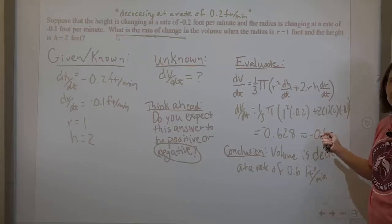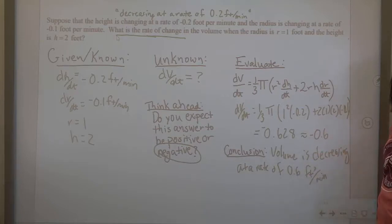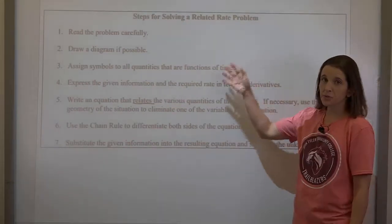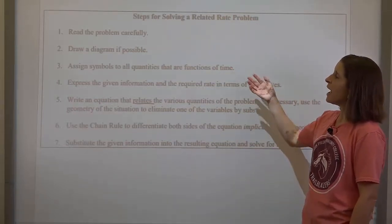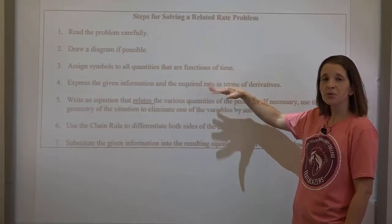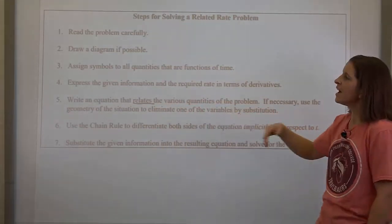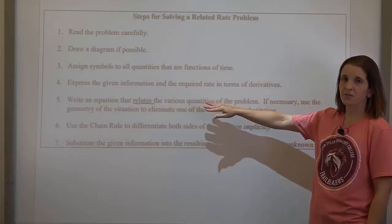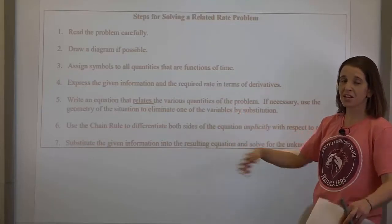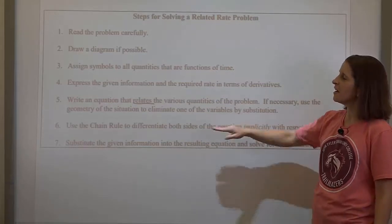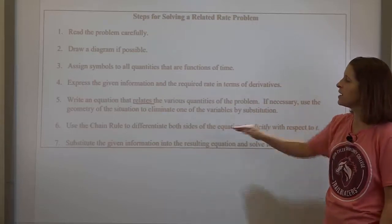Our steps are: read through the problem carefully; if there's no diagram provided, draw one; go through knowns and unknowns; write an equation relating the various quantities — that's why it's called related rates. Sometimes it's better to write the equation first so you know what letters to use. The biggest thing is that this is the chain rule — implicit differentiation just a little bit harder core. Remember that every time you get to a variable changing with respect to time, you need the chain rule.